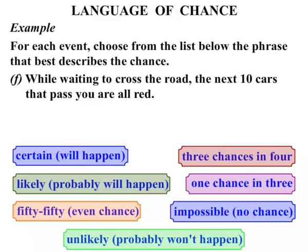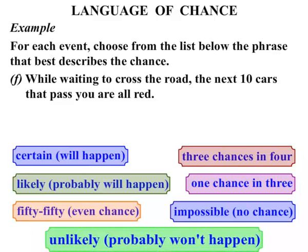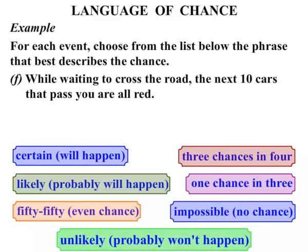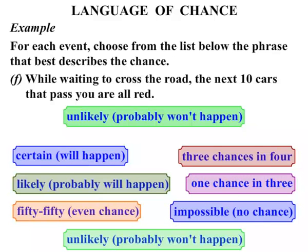While waiting to cross the road, the next ten cars that pass you are all red — what are the chances of that? Well, it probably won't happen, so it's unlikely. We wouldn't say it's impossible; there is a chance that it would happen, but it's very unlikely.